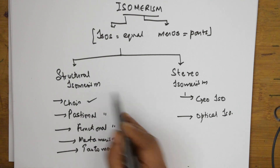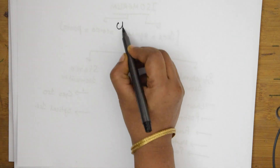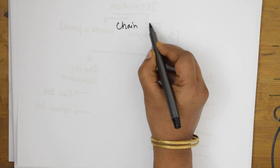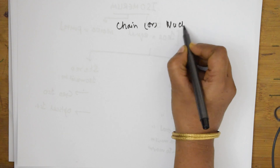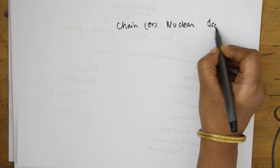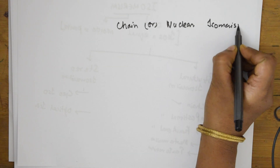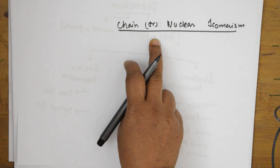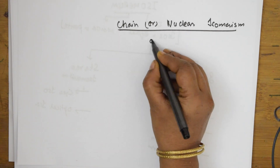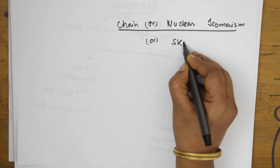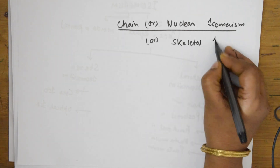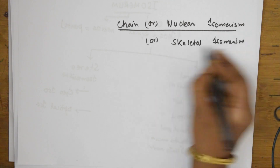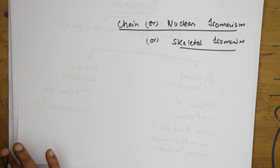Let's start with the first one — chain isomerism. It is also called nuclear isomerism or skeletal isomerism. Let's see an example and then understand it.